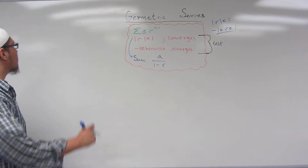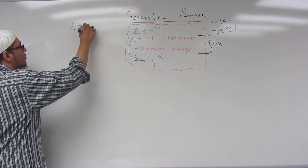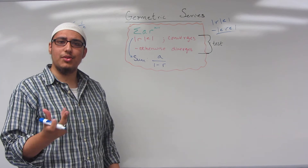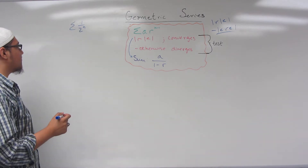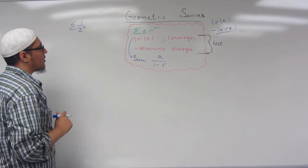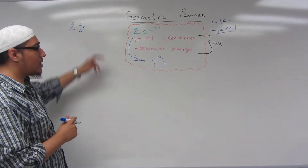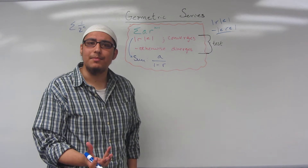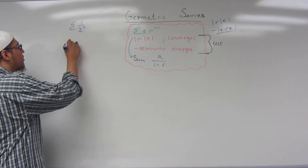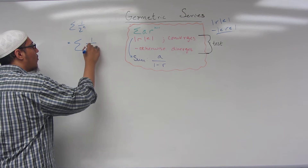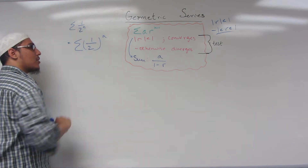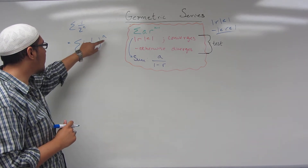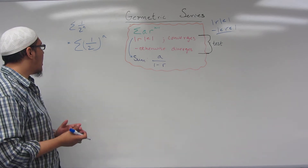Let's go over this one: sigma 1 over 2 to the n. The question is, is this series convergent or is it divergent? This does not look like the format of a constant raised to some power — it looks like the n is in the denominator. However, the key is rewriting: we can rewrite it as 1 over 2, the entire thing raised to the n power, because n gets distributed to everything inside using the rules of exponents.